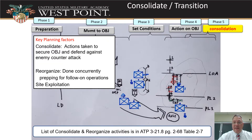Now we get down to phase five, consolidation. Key planning considerations are how we're going to consolidate, what we're going to do to secure the objective and defend against counter-attack, and how to give ourselves security while we police up the area. Then how are we going to reorganize to be prepared for the follow-on mission — that can be shown here too.